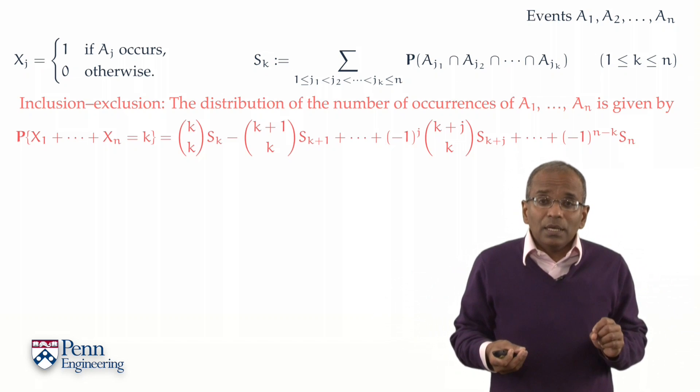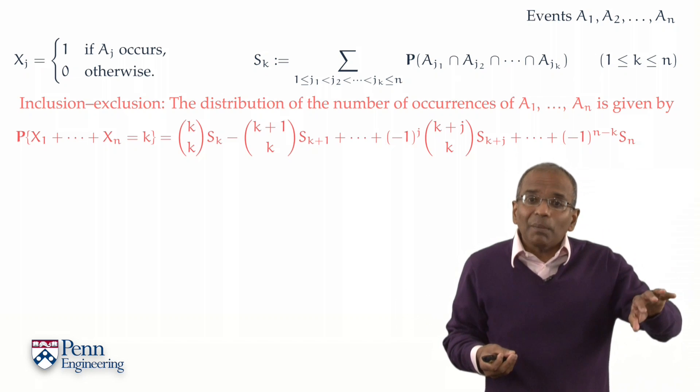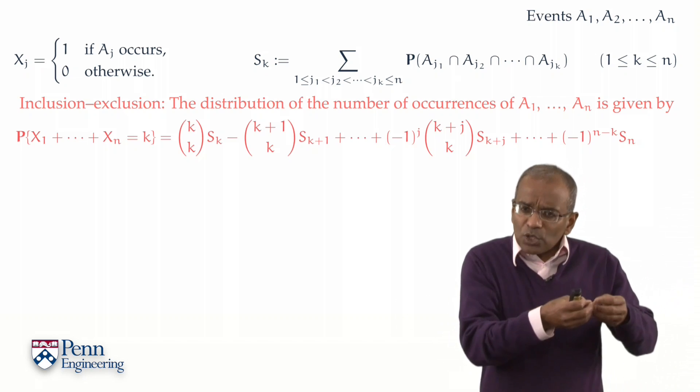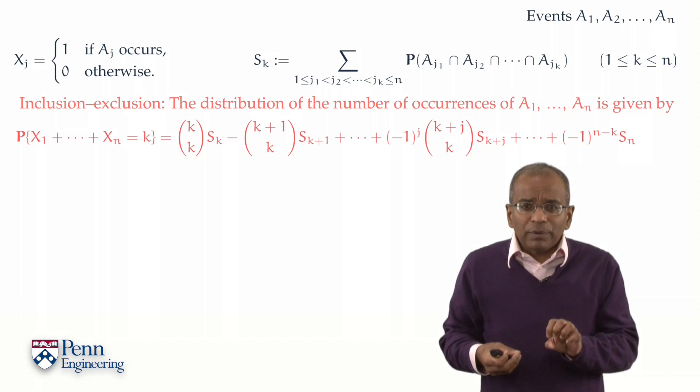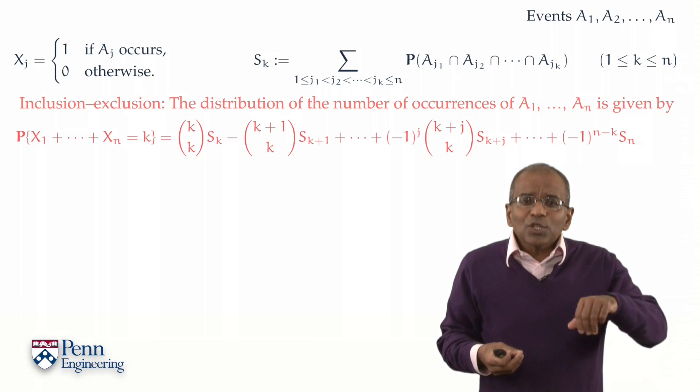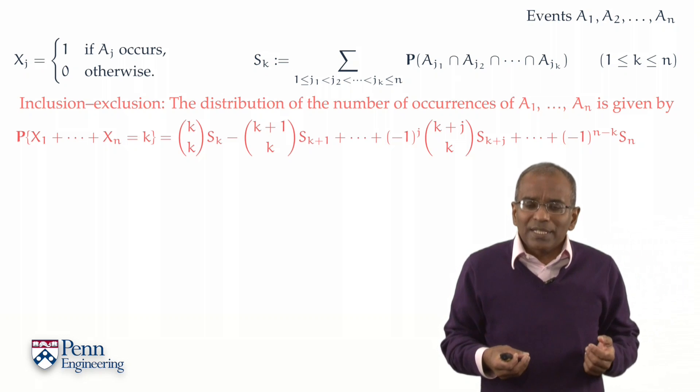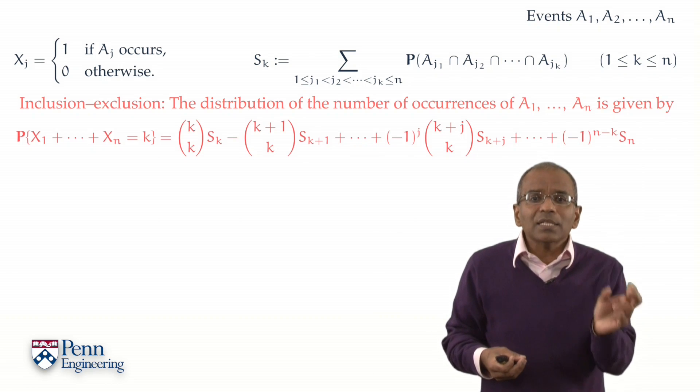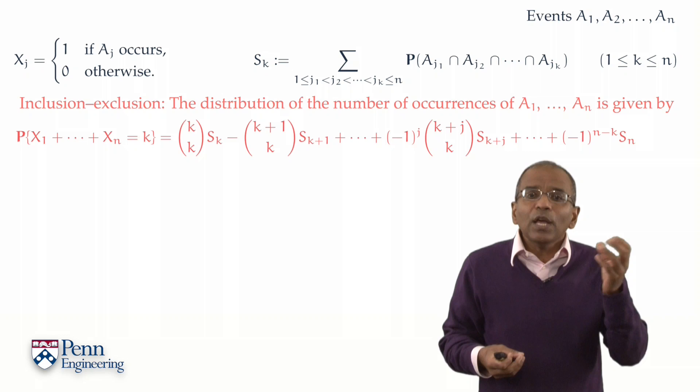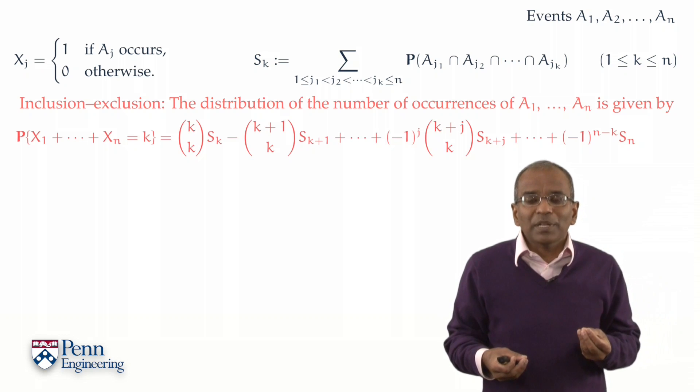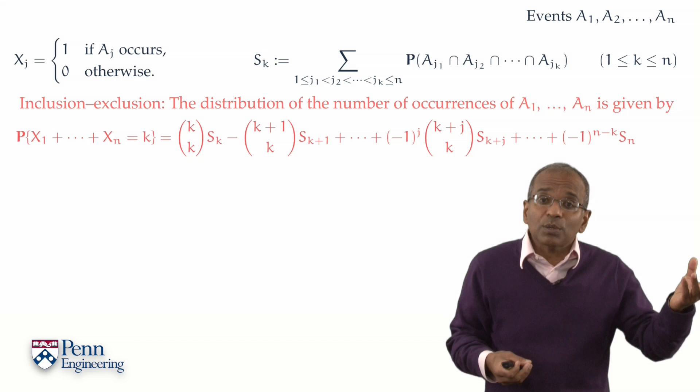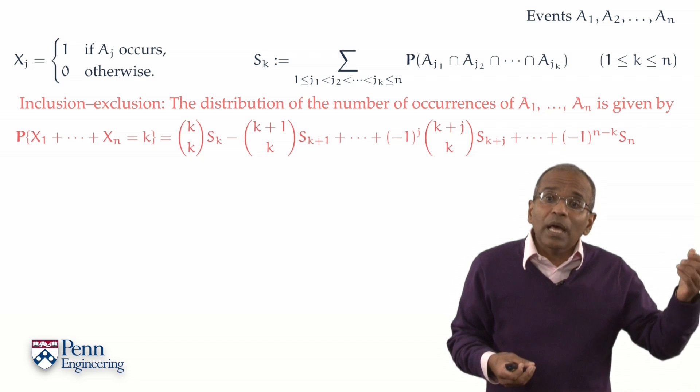On the right-hand side, we get an alternating sum. And it looks complex, assuredly. But what we take away from this is, atop all those binomial coefficients which appear on the right, what we're seeing are the terms which involve the k-wise intersection probabilities, the k plus 1 wise intersection probabilities, the k plus 2 wise intersection probabilities, and so on and so forth.